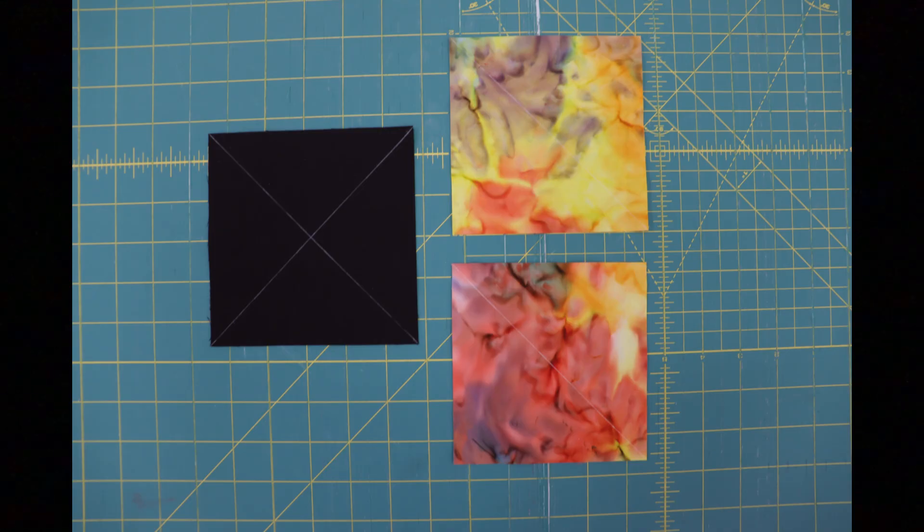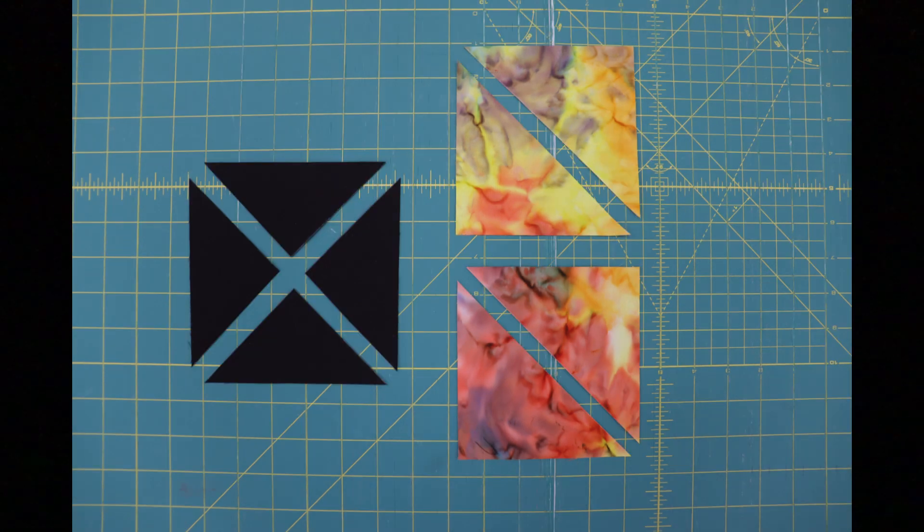We're going to start by dividing up a couple of our squares into some triangles. Start with your two four and seven-eighths inch tourmaline squares. You're going to cut those from corner to corner, and with those two, you're going to get four half-square triangles. Then you're going to take your five and a quarter inch background square, my black, and cut from corner to corner on both sides to make four quarter-square triangles. Feel free to mark these before you cut to make sure that you got them nice and precise.